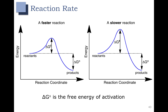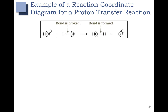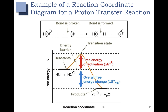Now we know a little bit about reaction coordinate diagrams, so we can go back and look at some. Here's a reaction coordinate diagram for a proton transfer reaction. What we see here is HCl reacting with hydroxide. HCl is a strong acid and hydroxide is a strong base. You can see that the energy of the reactants is much higher than the energy of the products. The overall free energy change is negative, so this reaction is going to be spontaneous or favored — we can think of this as a downhill reaction.